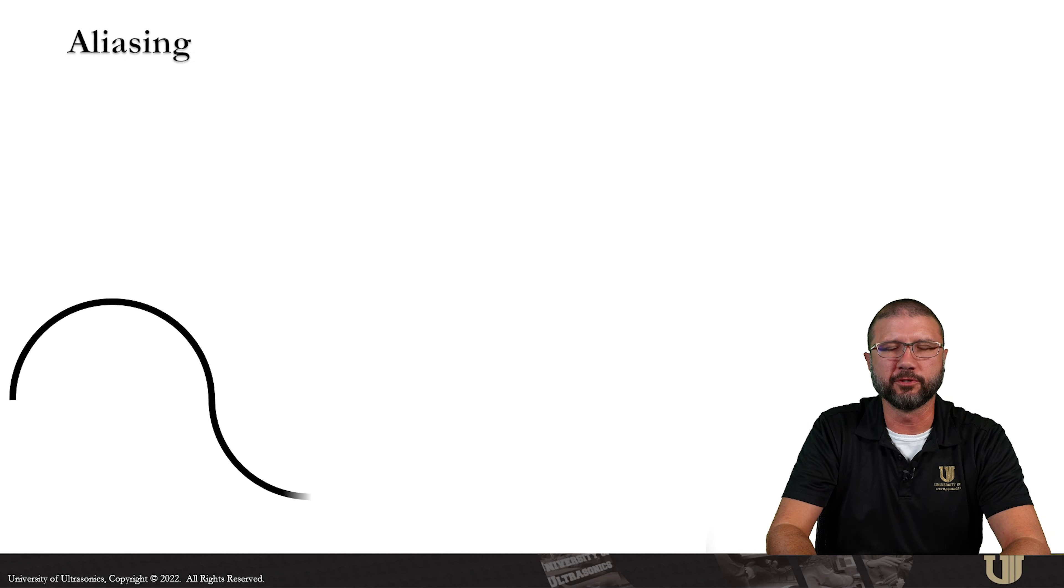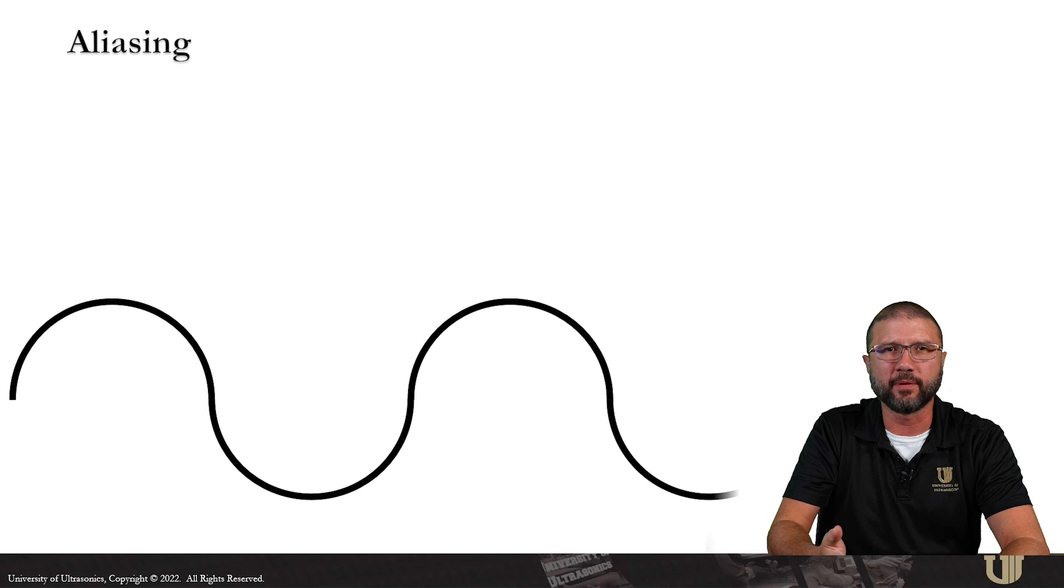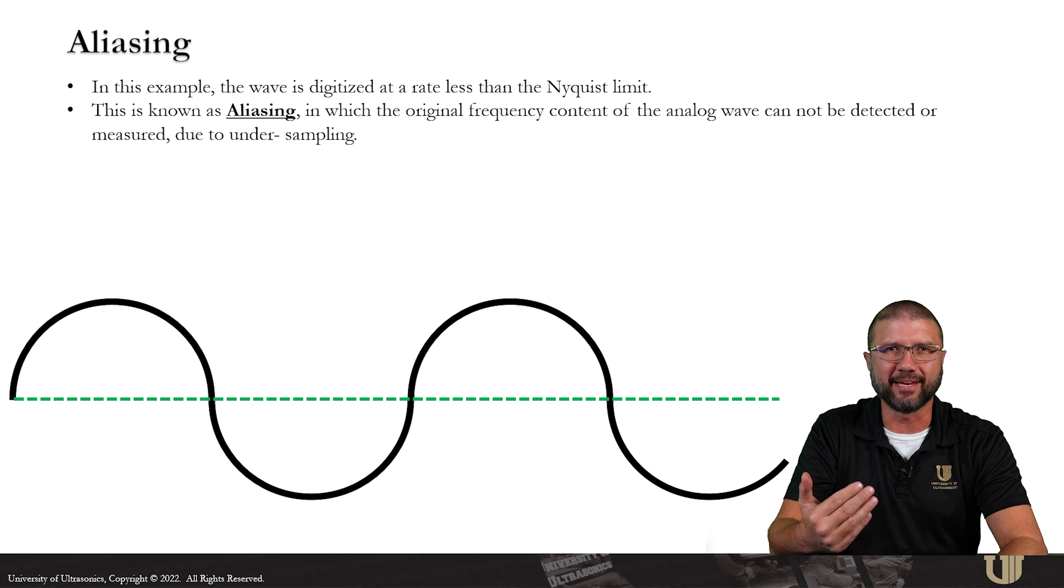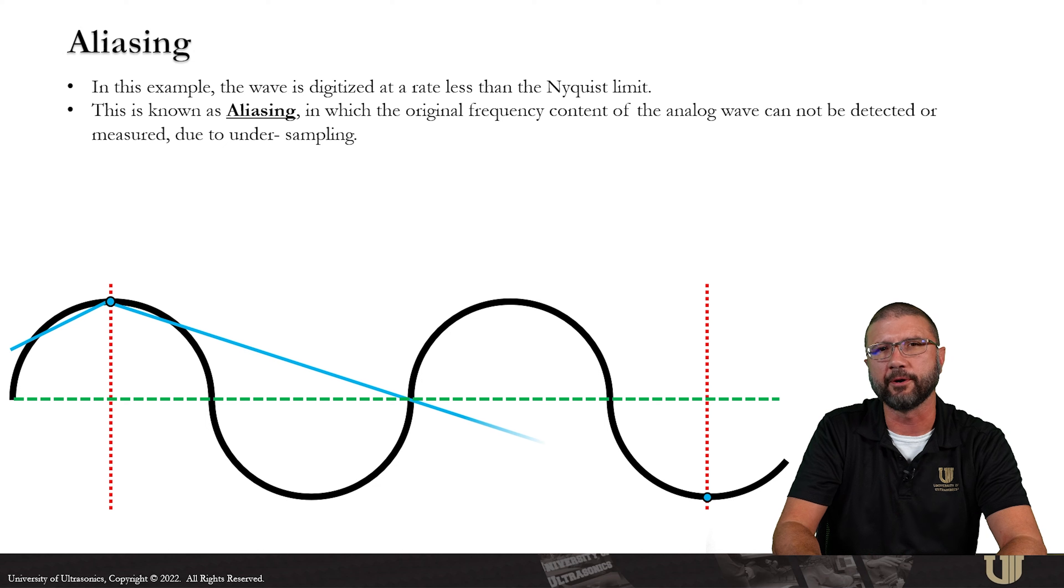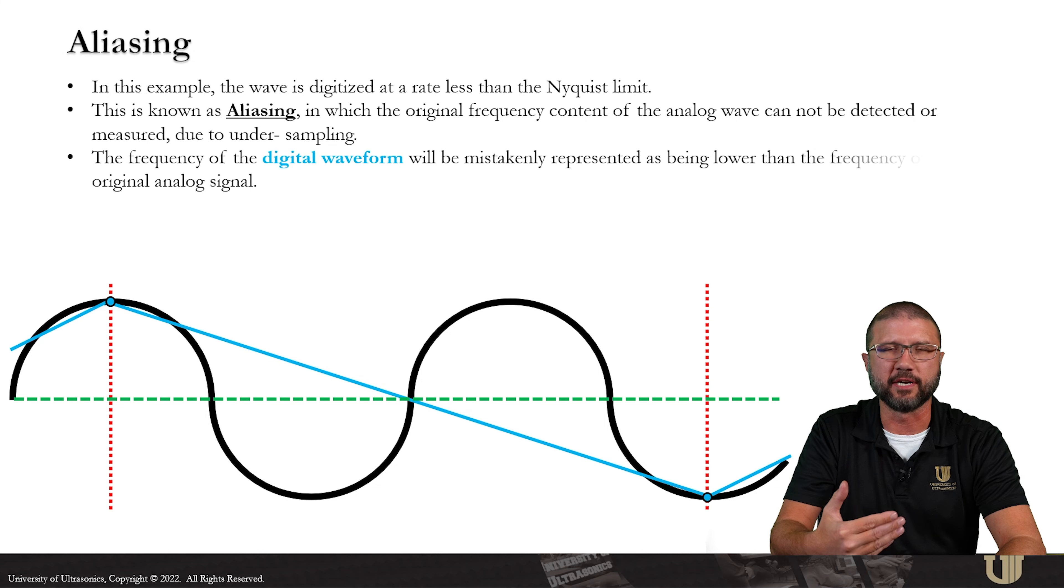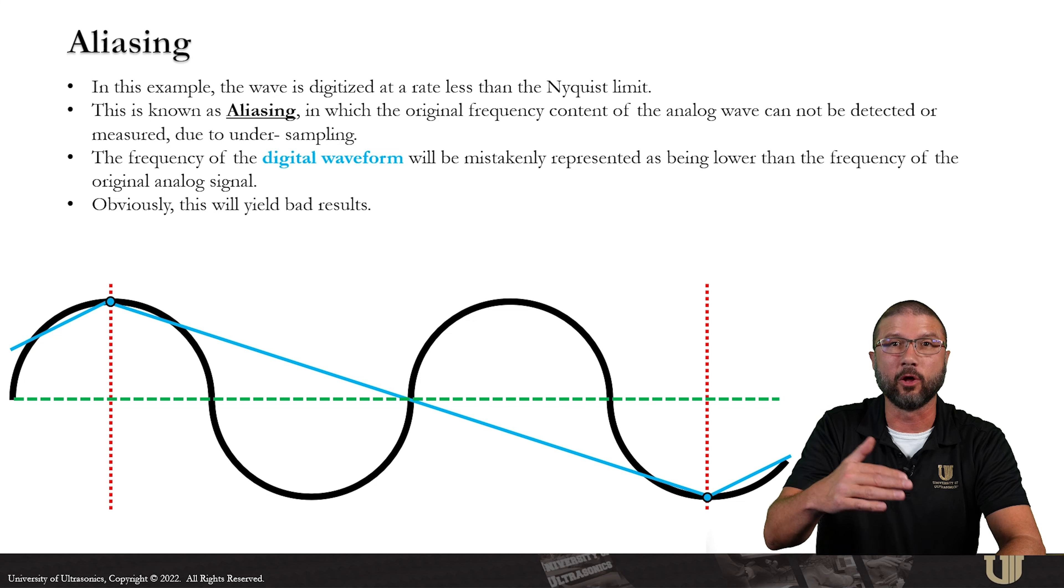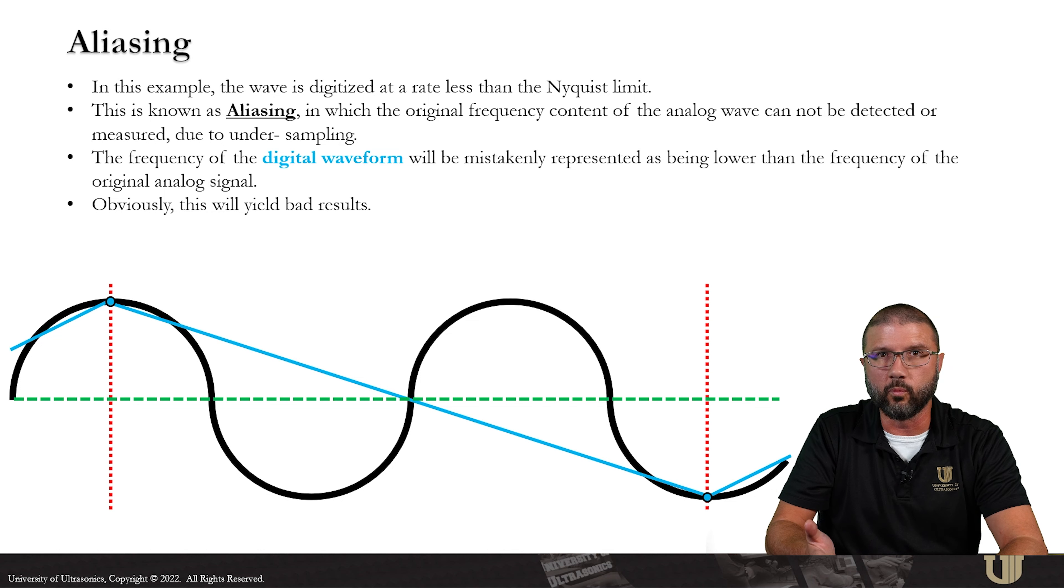And we have one more issue that we need to address. There's a problem called aliasing. So what happens here, the wave is digitized at a rate that is less than the Nyquist limit, meaning we have fewer than two samples per period. The original frequency content of that analog wave, we're not going to be able to detect and measure that because we're under sampling here. The frequency of that waveform is going to be mistakenly represented as being a lower frequency than the frequency of the original analog. And obviously, this is going to yield bad results. So we don't want to do that either.